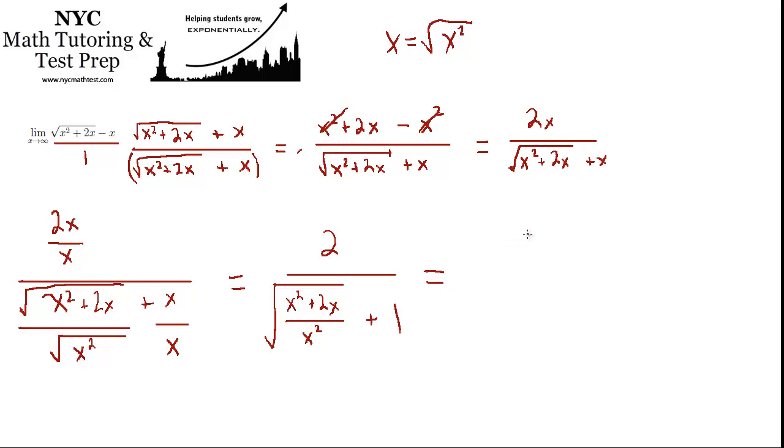And now what happens under here? Well, that becomes, we still have the 2. And now x squared over x squared is just 1. And 2x over x squared is 2 over x. And that's all under a square root still. And it's plus 1.